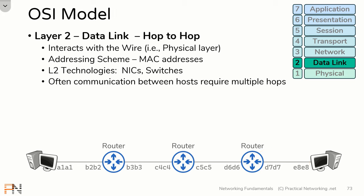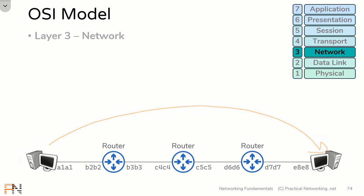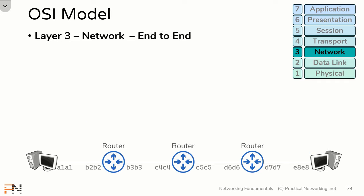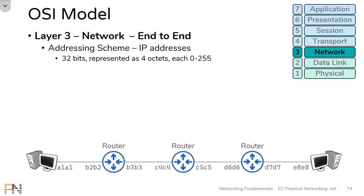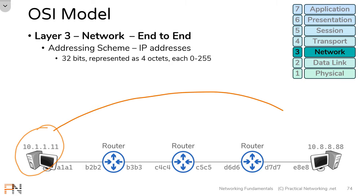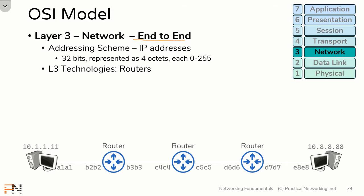If Layer 2 is taking care of every hop, what's taking care of ensuring data goes from one endpoint all the way to the next? That's where Layer 3 comes into play. Layer 3's goal is what's called end-to-end delivery. To accomplish its goal, Layer 3 is going to use its own addressing scheme known as IP addresses. IP addresses are 32 bits, represented as four octets, each ranging from 0 to 255. Every host is identified by its IP address, and these IP addresses allow data to travel all the way from source to destination. Routers are considered to exist at Layer 3 of the OSI model, as are hosts — really, anything with an IP address can be considered to exist at Layer 3.